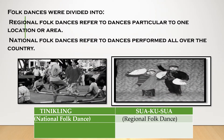Folk dances were divided into two. Regional folk dances refers to the dance particular to one location or area. National folk dance refers to the dance performed all over the country. Tinikling is a national folk dance, and Suakusua is a regional folk dance.